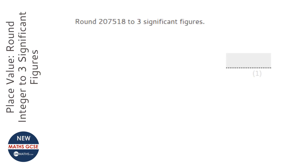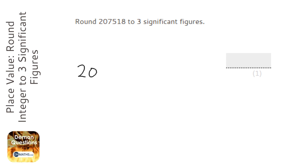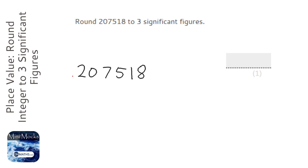We're asked to round to three significant figures. So what I'll try and do first is write the number down. With significant figures, we start counting at the start of the number — we don't start counting the decimal points. So I'm going to start counting here, and I'm going to count 1, 2, 3, and I'm going to draw a line down.